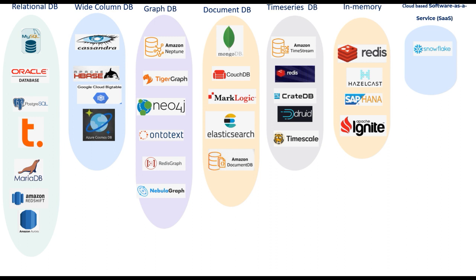Snowflake has support for semi-structured data, and there are some distinct advantages over NoSQL databases like Cassandra and MongoDB. Snowflake's native support for semi-structured data means your JSON, XML, Parquet, and Avro data can be loaded and ready for querying in minutes.